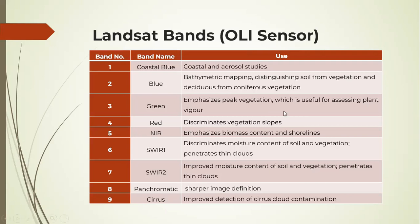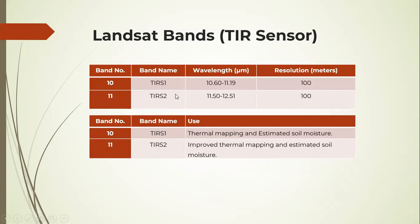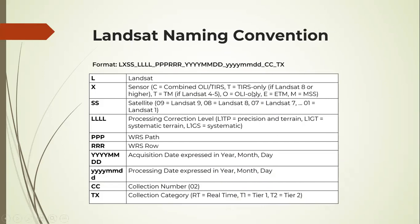I will share these slides. When we move to the TIRS sensor, it only has two bands, that is the TIRS-1 and TIRS-2, band 10 and 11, both for thermal mapping and for estimated soil moisture.